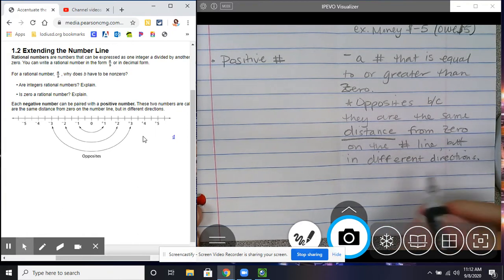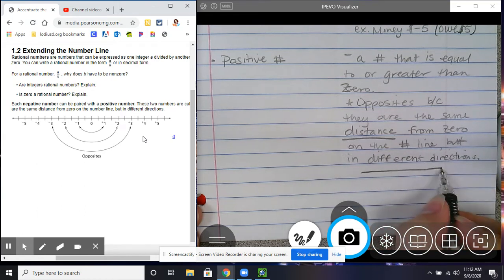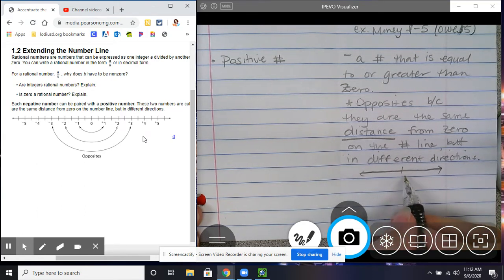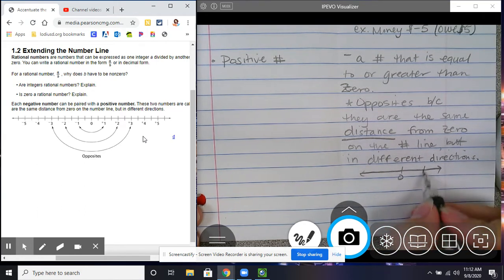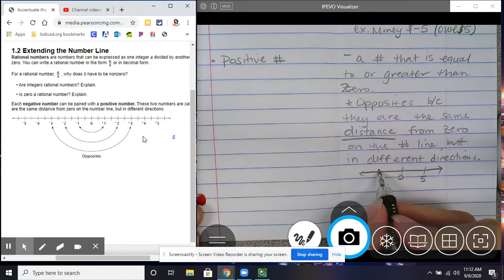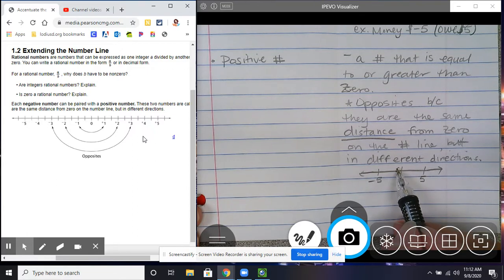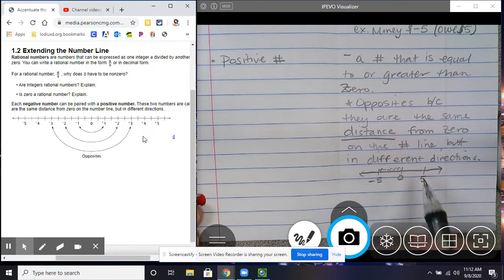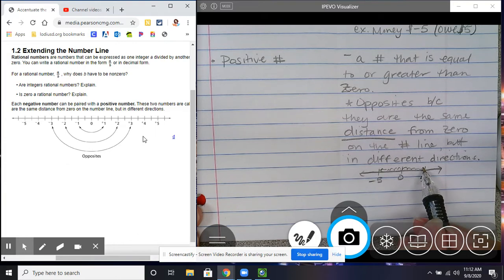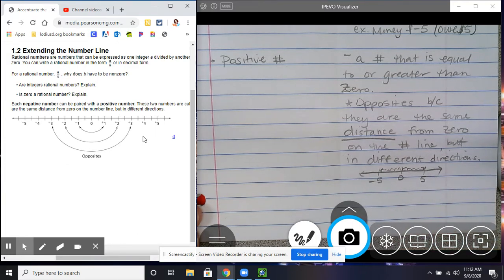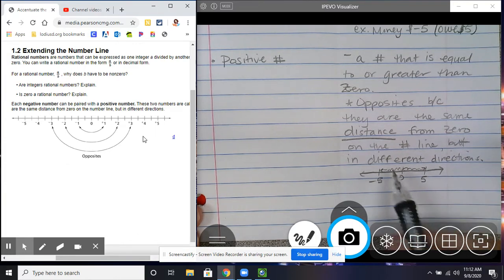Remember, I kind of did that in 1.1. Distance from 0 on the number line, but in different directions. Okay, so for example, if I have a number line here, 0, I'm going to take positive 5 and negative 5. Okay, they are the same amount of bunny hops away from 0 in either direction. 5 this way, 5 this way. It's just that negative 5 is to the left of 0 and positive 5 is to the right of 0.